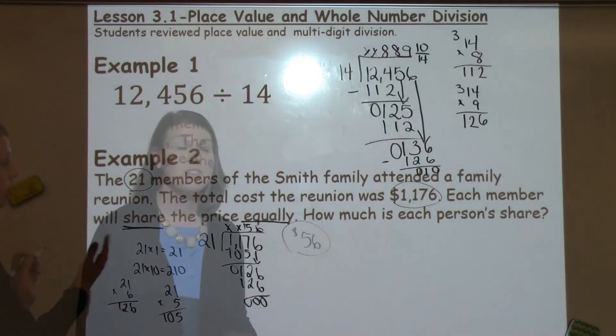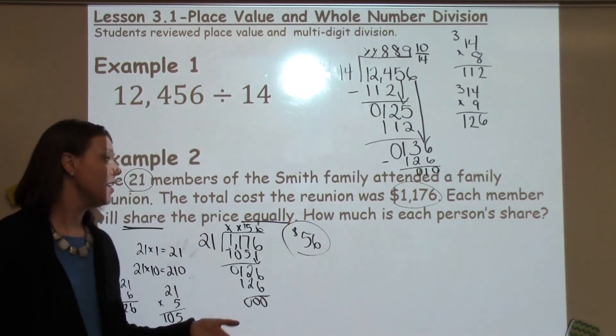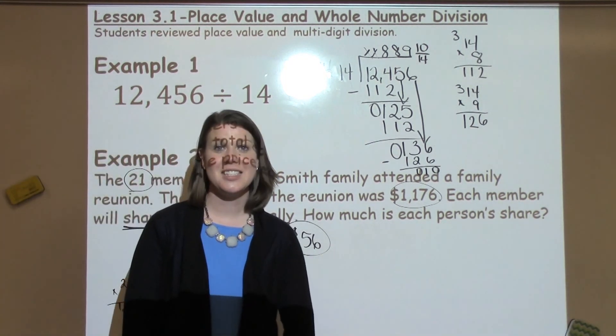So I'm going to go back and add my dollar sign. How much does each person share for the family reunion? It's $56. If you have any questions, see your math teacher.